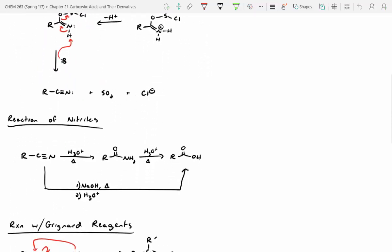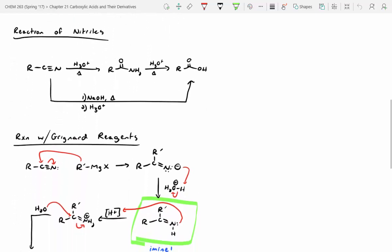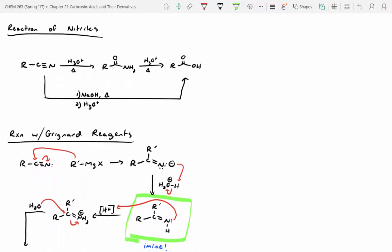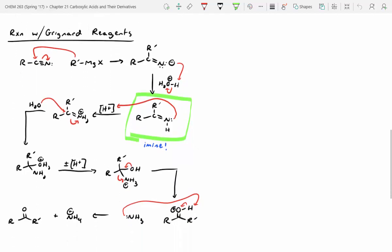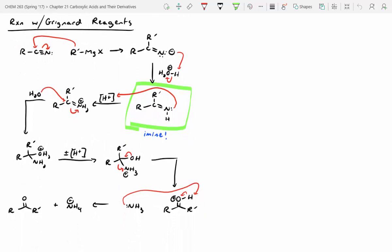And then reactions of nitriles, we said you can convert a nitrile to an amide or a carboxylic acid, depending on how much heat you use. Or you can react a nitrile with a Grignard reagent and actually get to a ketone, which is also a clever way of making ketones.